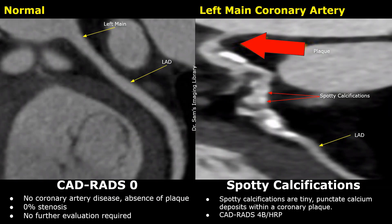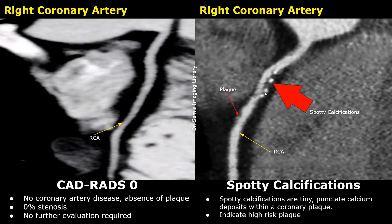We come back to this case we saw earlier. Here we see many small dotted hyperdense calcifications in low-density non-calcified plaques. These are called spotty calcifications and this is another feature of a high-risk plaque. So this case is classified as CADRADS-4B HRP. Here is another case showing multiple tiny punctate calcifications within a low-density plaque. This appearance also indicates a high-risk plaque.